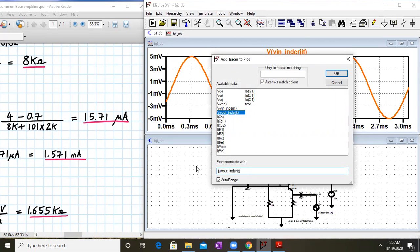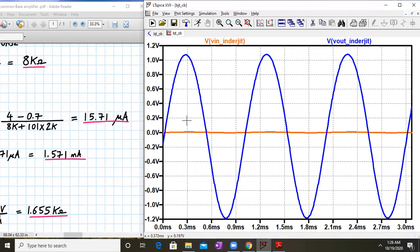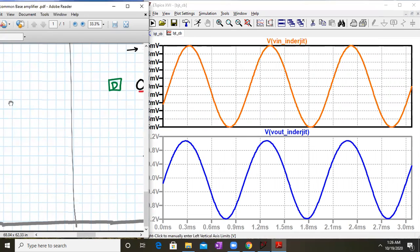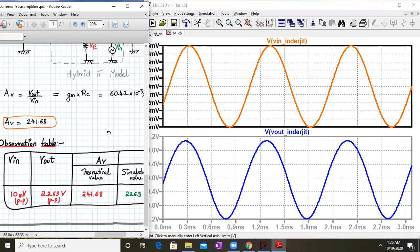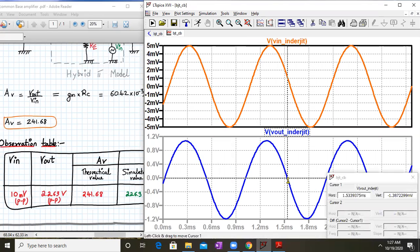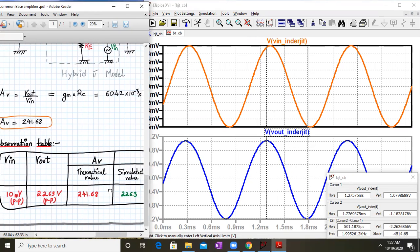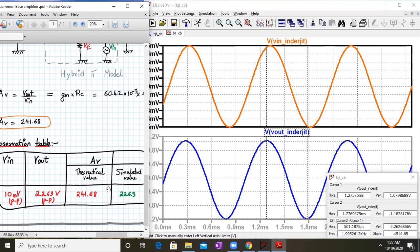So this is my V out. If I divide it into two plane plots and pick it up, I can see this. This is in five millivolt and this is close to one volt. So now let's check the observation table. VIN I applied as 10 millivolt peak to peak. I left click over here and select another cursor and bring it to the lower peak. So I'm getting around 2.262 volt peak to peak value. 2.262 volt divided by 10 millivolt gives simulated value as 226.3 and the theoretical value is 241.68.